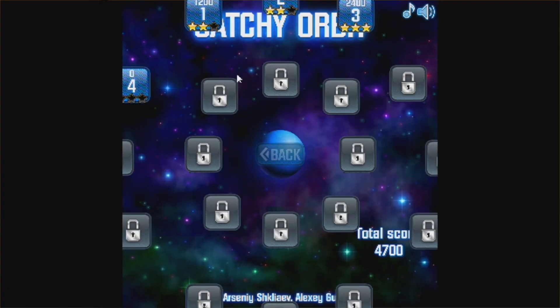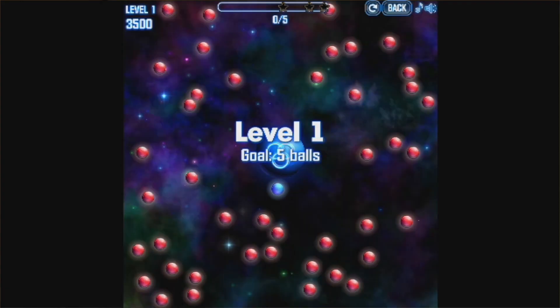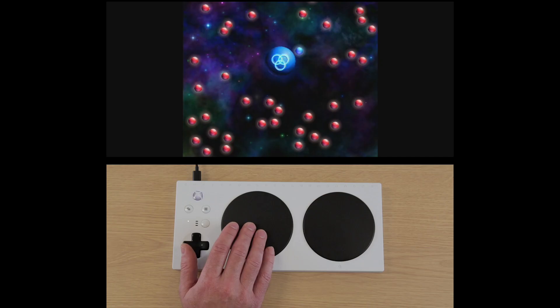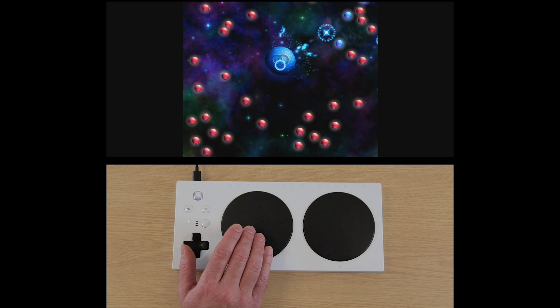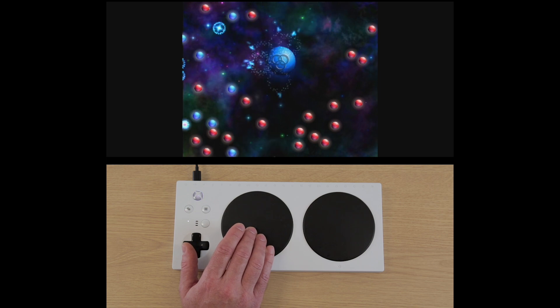This is Catchy Orbit, which is a single switch game. The aim of the game is to turn the red balls blue. If you reach the targets set at the top of the screen, you'll progress to the next level.